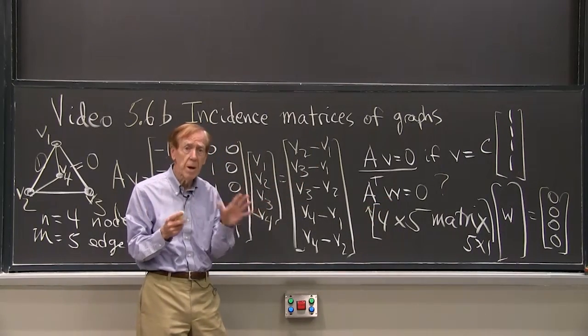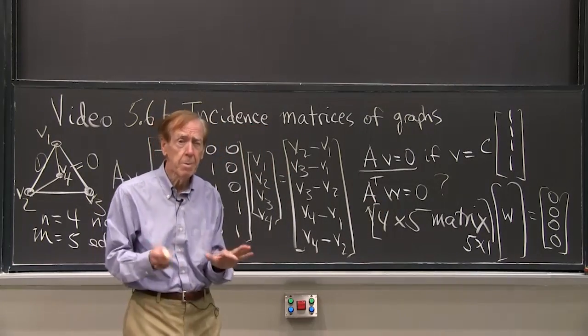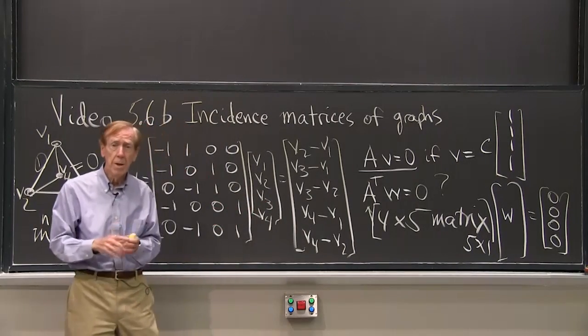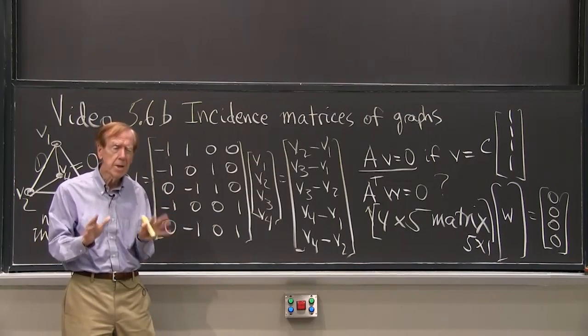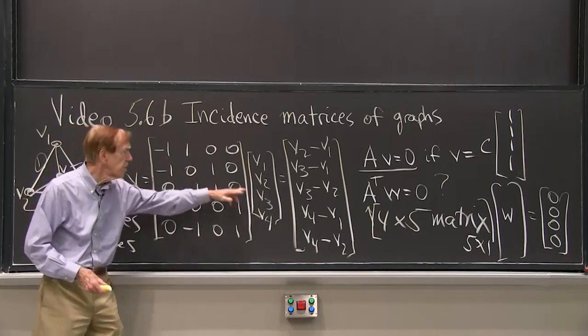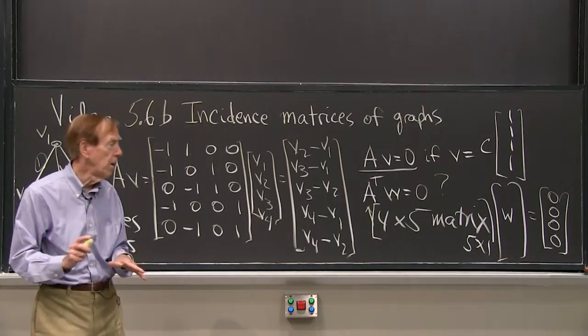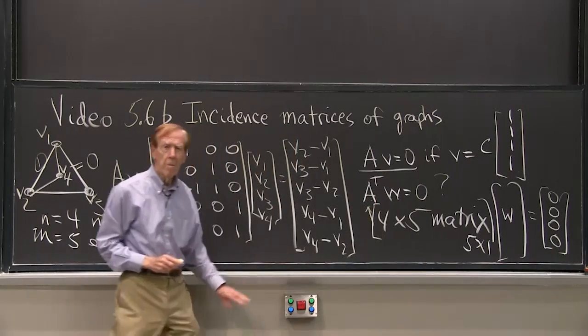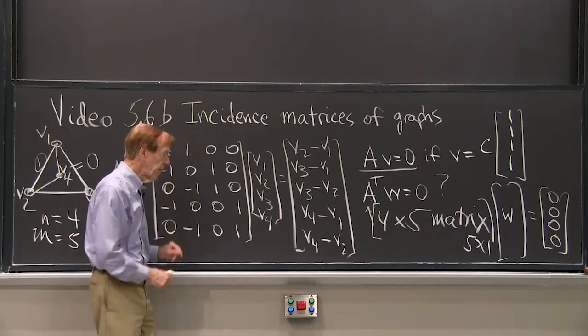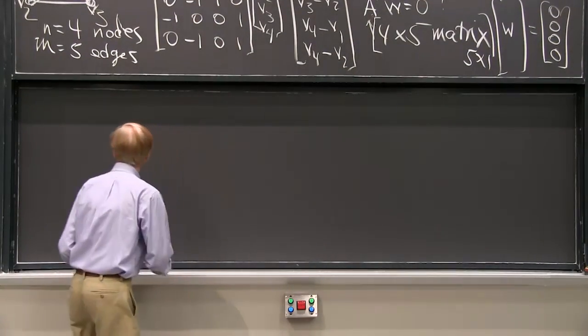Well, the question is, how many different w's could I find? How many different solutions? And what do they mean? And that's the beauty of this example, that it's not just a bunch of 20 numbers in the matrix. The matrix has a meaning. The incidence matrix takes differences. Av is differences in v. But what's the meaning of A transpose? That's the key question here. Why is this equation very important? So I have to tell you the meaning of A transpose.